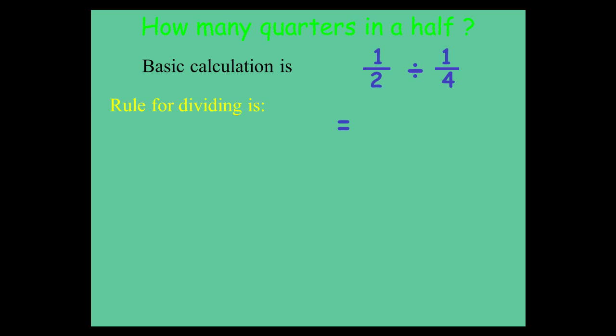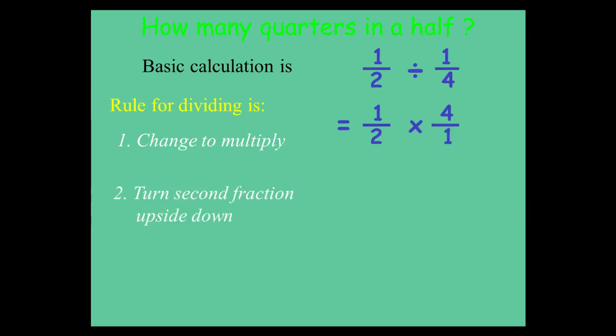To divide a half by a quarter, what you need to do when you're dividing by a fraction is flip the second fraction upside down. So you end up multiplying by the reciprocal. You change the calculation to a multiplication, and you multiply by the reciprocal. So you take 1 over 4, flip it upside down, and it's now 4 over 1. Then you just continue with the calculation like you would when you're normally multiplying fractions.